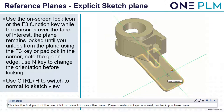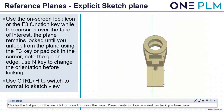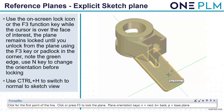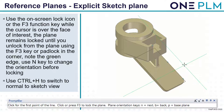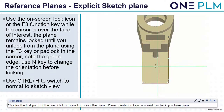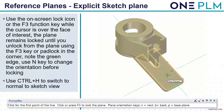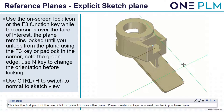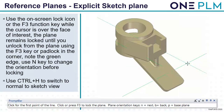Within synchronous technology we don't have a specific sketch environment — we sketch on faces within the normal 3D environment. We can use the on-screen lock icon or the F3 function key while the cursor is over a face to lock the plane. This remains locked until we use F3 or the padlock which appears in the top right of the screen. We get a green edge showing the plane lock orientation. We can change this using the N, B, or P keys. Once locked to the plane, we can use Ctrl+H to lock to that sketch view.